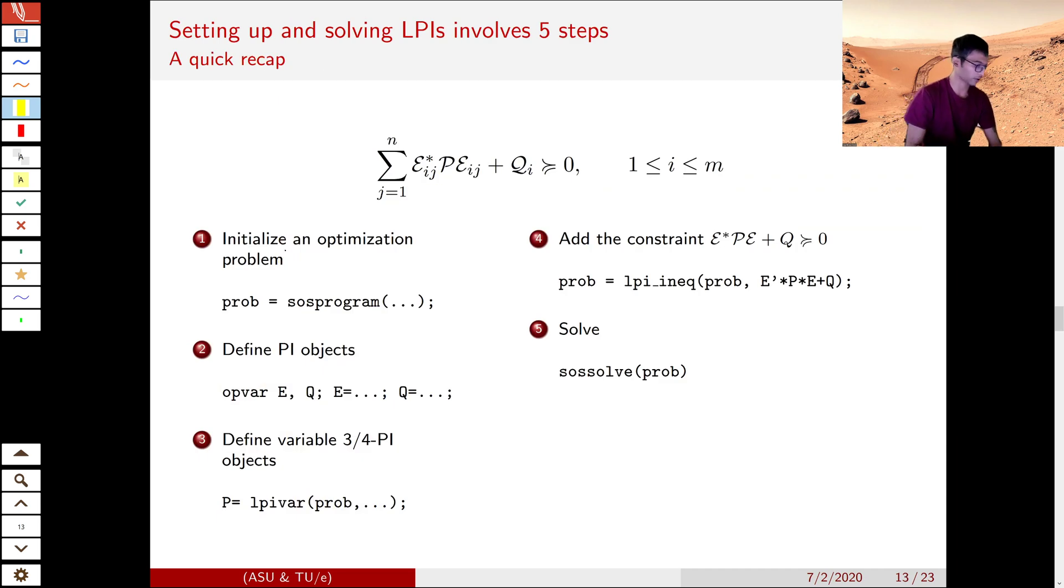To briefly summarize all the steps involved in solving an LPI, we need to set up an optimization problem. We need to set up known PI objects, unknown PI objects, we set up a constraint, equality or inequality, add an objective if there is one, and then just solve it.